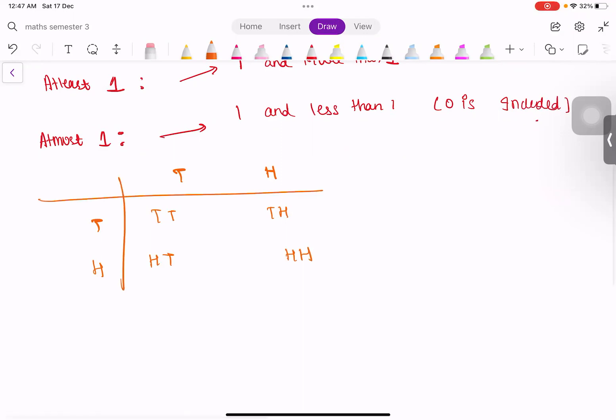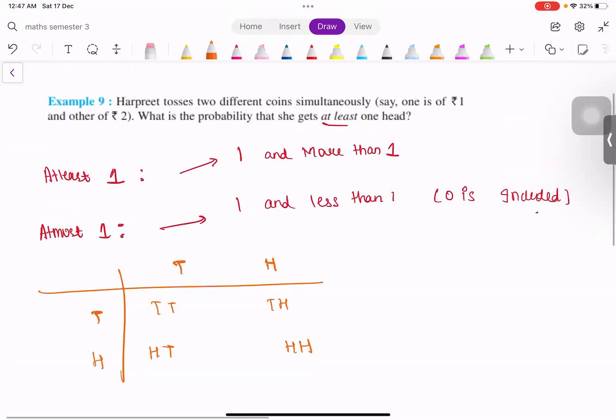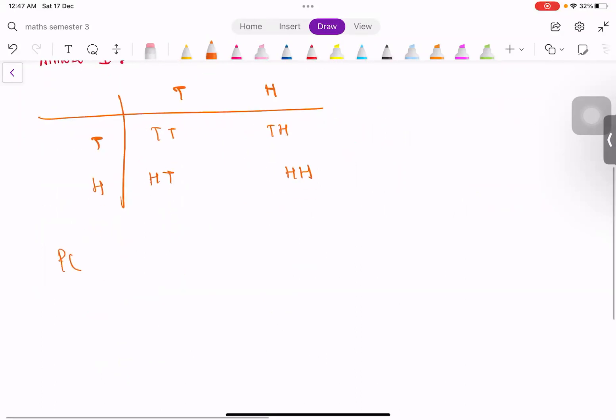Okay, what is the probability that she gets at least one head? Probability of at least one head. What is the probability that she gets at least one head?